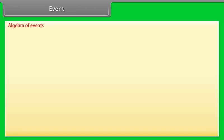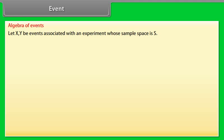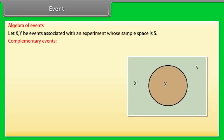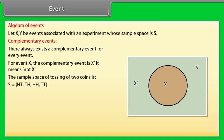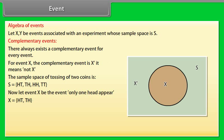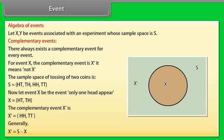Algebra of events. Let X, Y be events associated with an experiment whose sample space is S. Complementary events: there always exists a complementary event for every event. For event X, the complementary event is X′ — it means 'not X.' The sample space of tossing two coins is S = {HT, TH, HH, TT}. Let event X be 'only one head appears': X = {HT, TH}. Generally, X′ = S minus X.